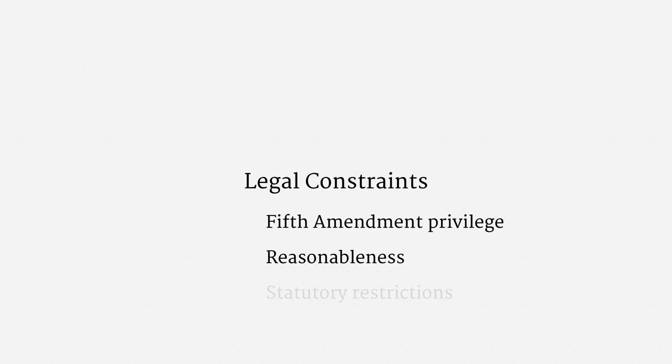There are also a few legal constraints on the subpoena power. First up is the Fifth Amendment privilege, which can prohibit compelling self-incriminating testimony. More on that in a moment. Second, subpoenas have to satisfy a reasonableness standard. We'll talk a little bit more about that too. Last, statutory grants of subpoena power sometimes include restrictions. For example, the National Security Letter statutes, which we'll discuss later in the course, apply only to specific categories of information.